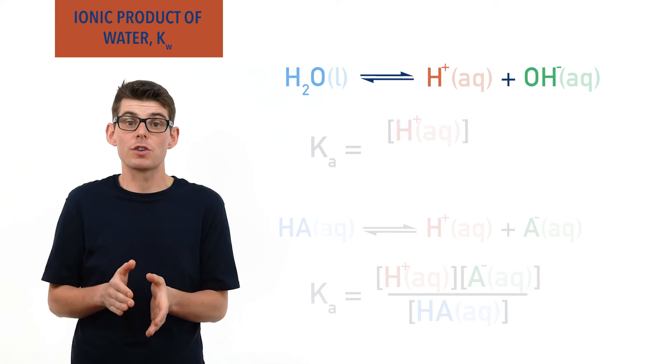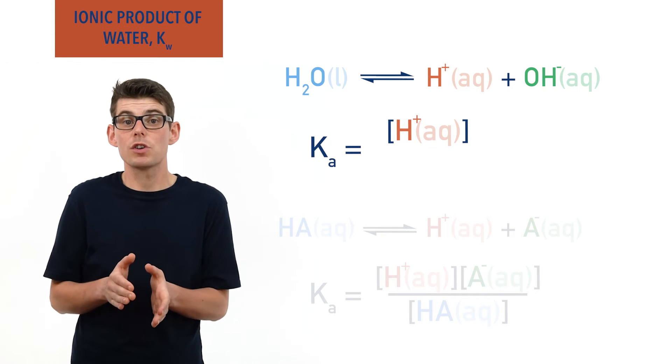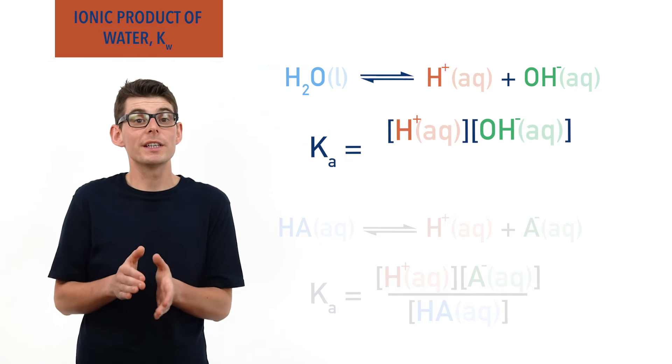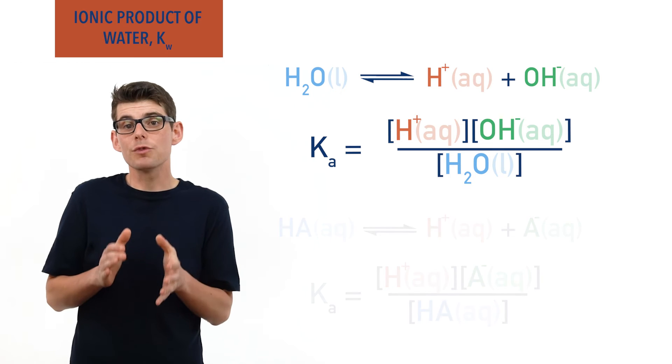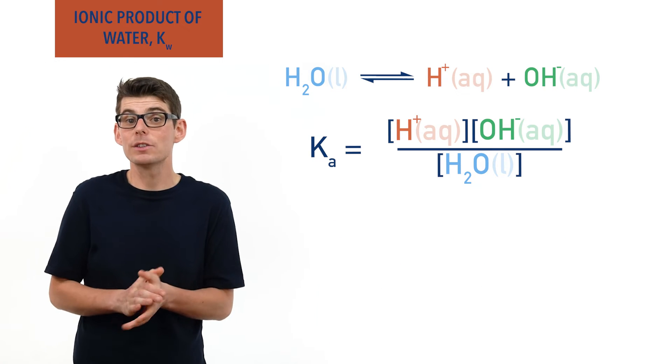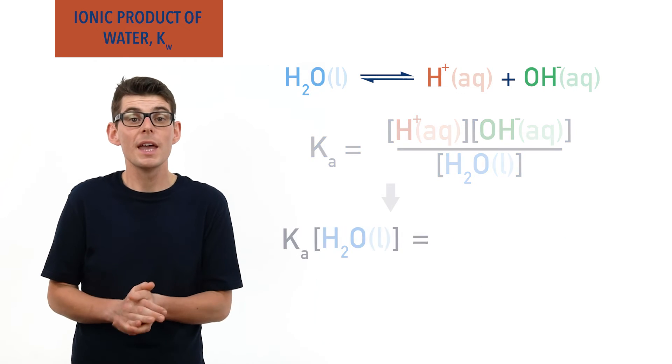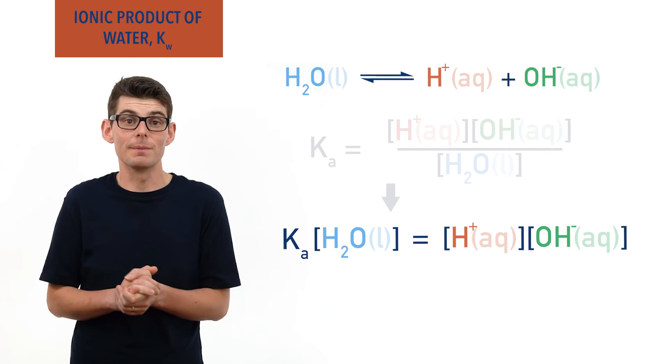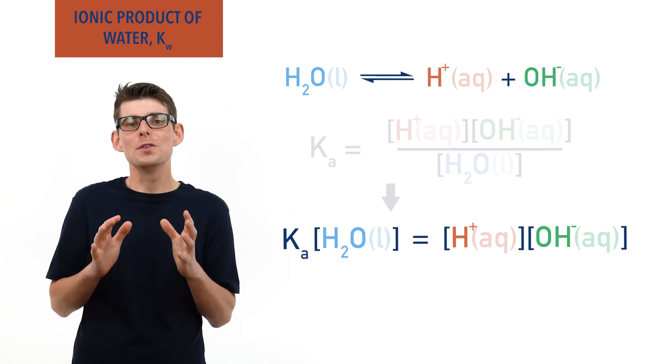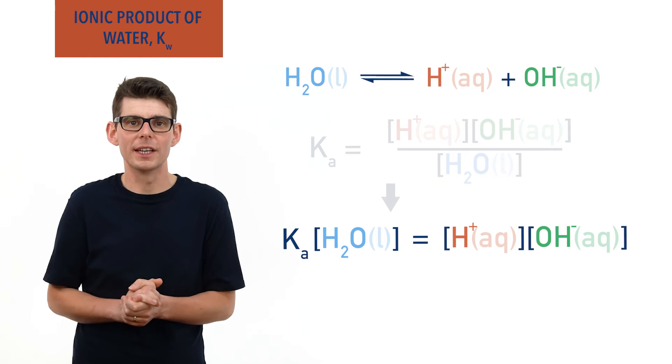We can rearrange this to give KA times concentration of H2O equals concentration of H plus times concentration of OH minus. Now, you may have spotted something odd here.